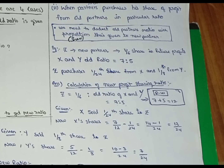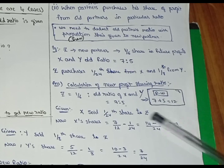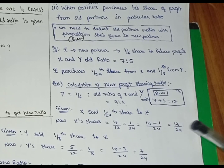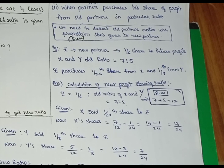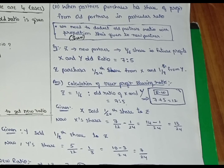So 7 plus 5 equals 12 total parts — X gets 7 parts and Y gets 5 parts. Given that X sold 1 by 24th share to Z, X's new share equals old share minus what was given to Z: 7 by 12 minus 1 by 24. LCM gives 14 minus 1 divided by 24, so X's new share is 13 by 24.